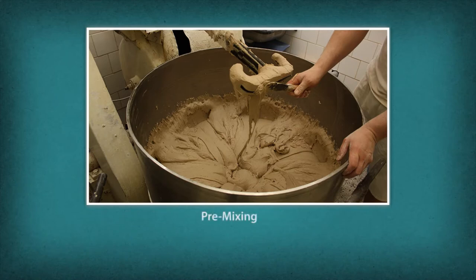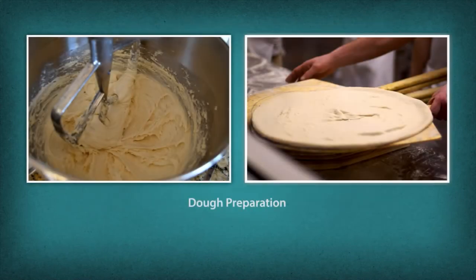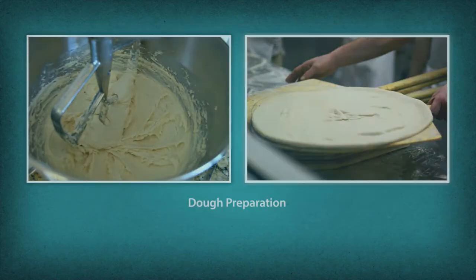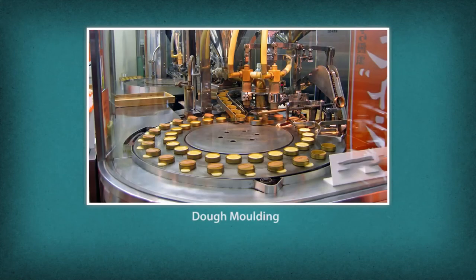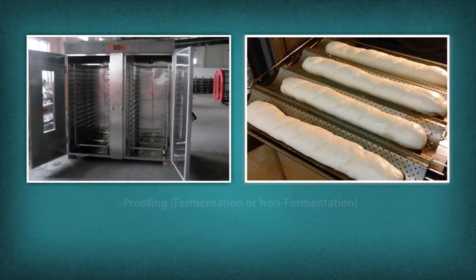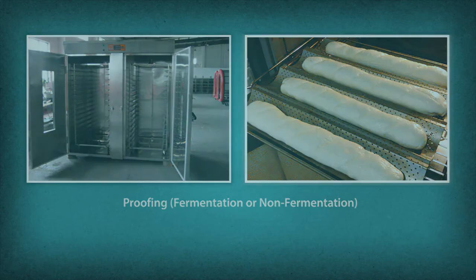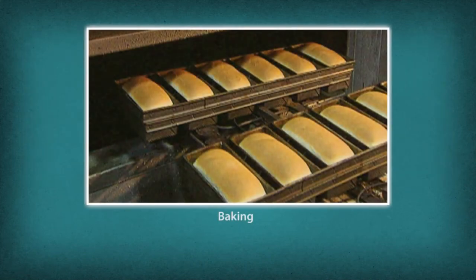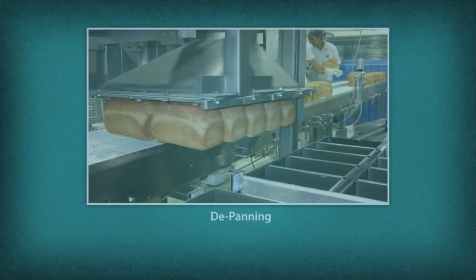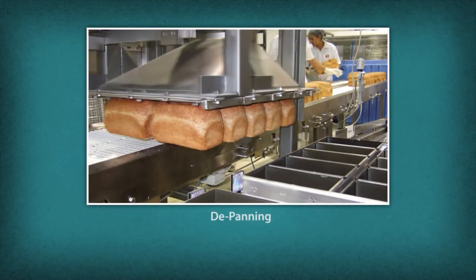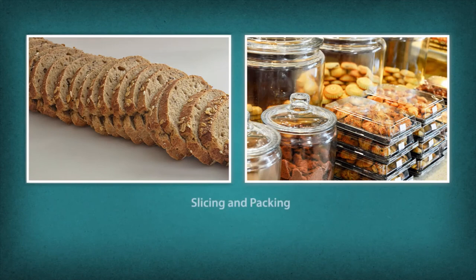The broad steps of the baking process are: Pre-mixing, Dough preparation, Dividing, Dough moulding, Proofing, Fermentation or non-fermentation, Baking, Cooling, De-panning, and Slicing and packing.